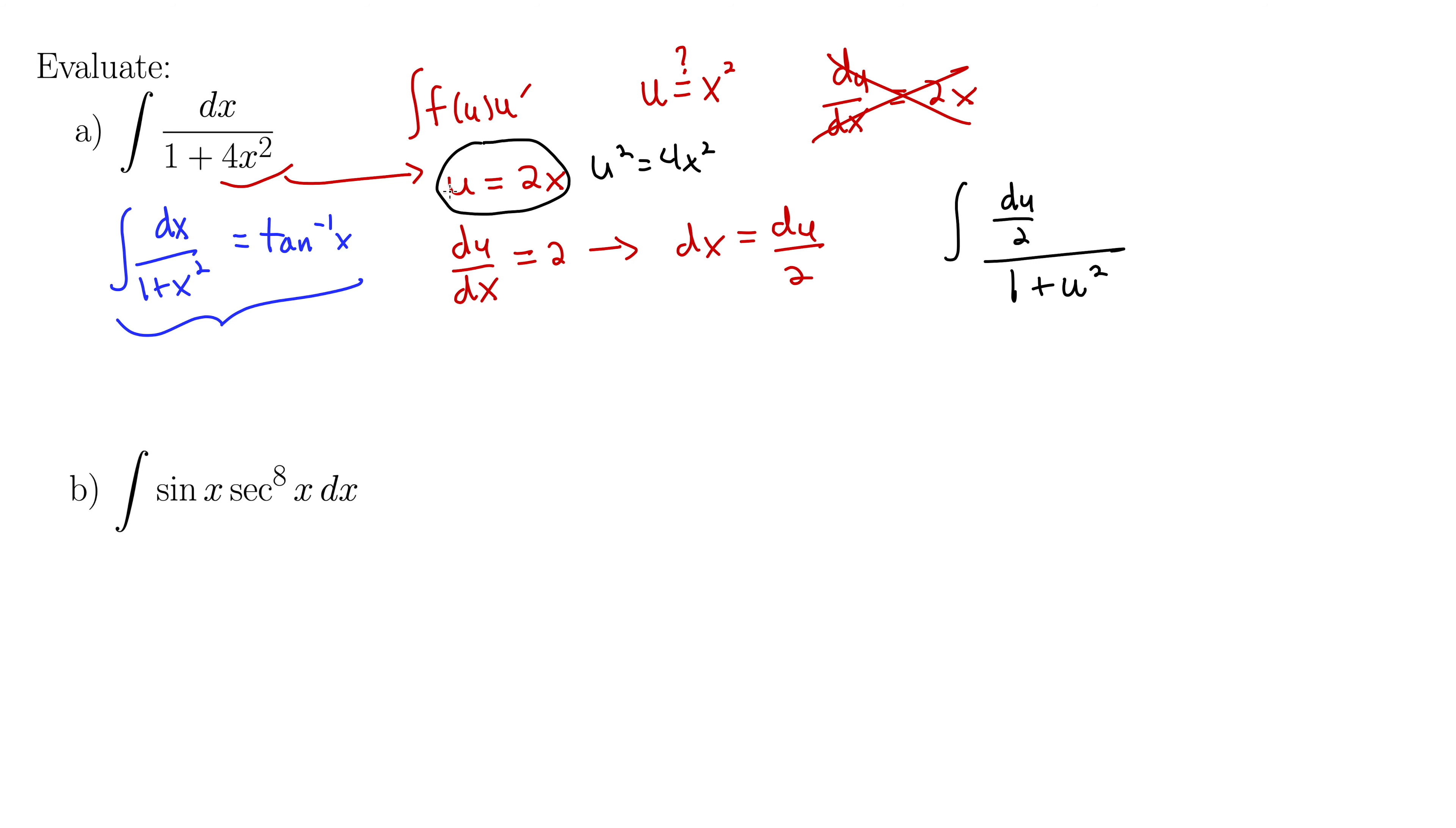If you really don't like that, you could also solve this quantity for x to get x equals u over 2. And then just plug in directly for x to get rid of the 4 that way. So there's kind of a lot of different ways of looking at this. One way or the other, our integral becomes 1 half integral of du over 1 plus u squared.